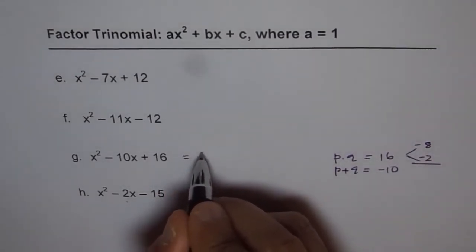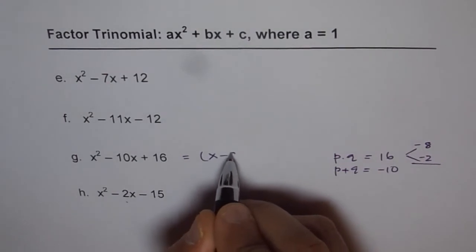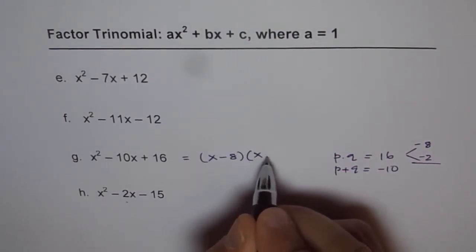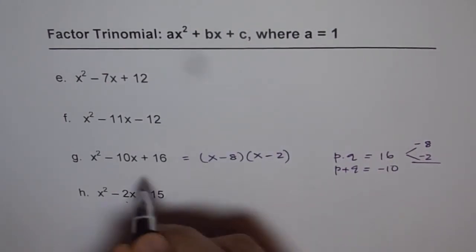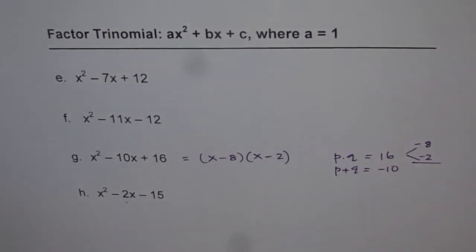And therefore, I can write this as x minus 8 times x minus 2. So that should give me x squared minus 10x plus 16.